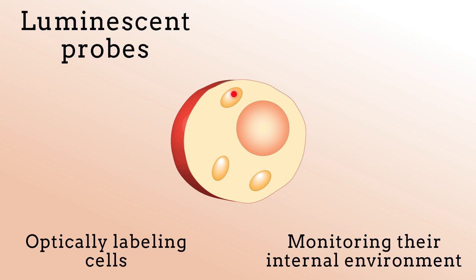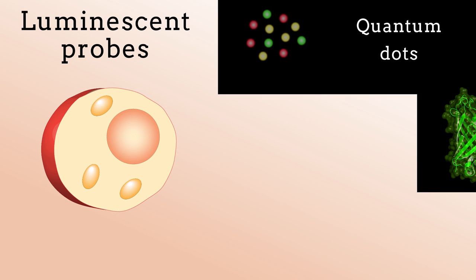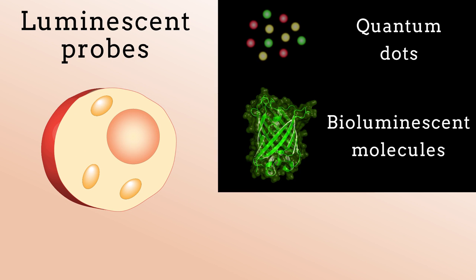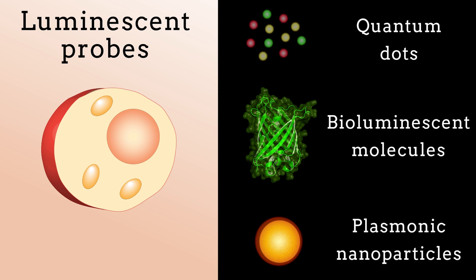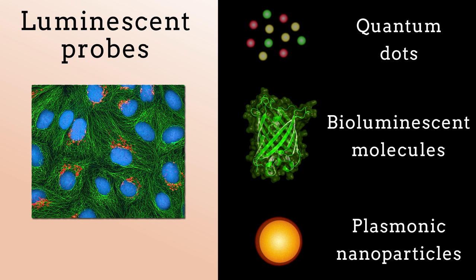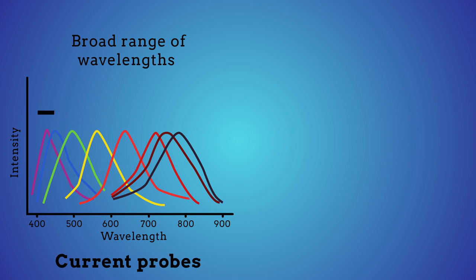Luminescent probes such as quantum dots, bioluminescent molecules and plasmonic nanoparticles have allowed for great advances in cell imaging. Nevertheless, the degree to which these probes can target unique cells, like an individual cancer cell, is limited by the fact that they emit over a broad range of wavelengths in the visible region.